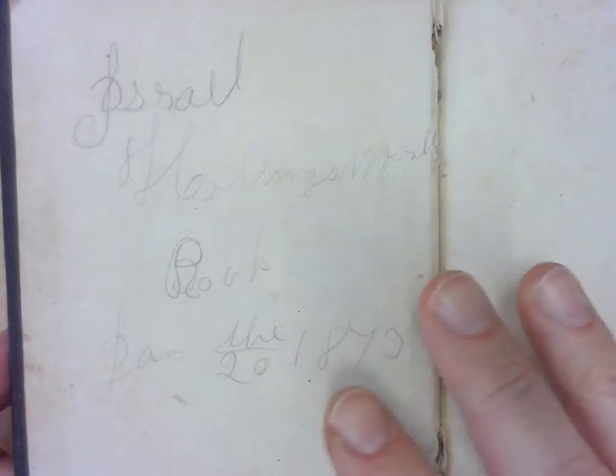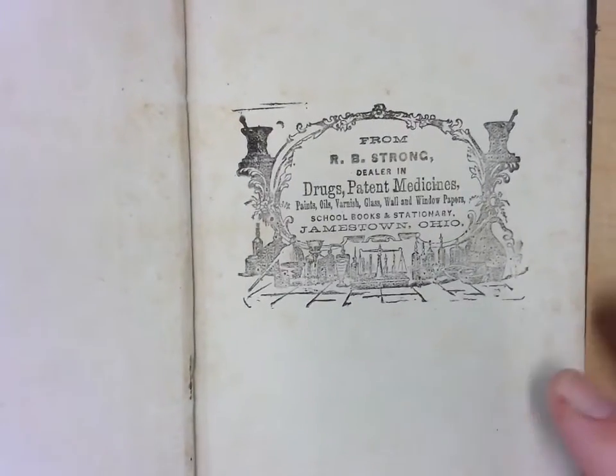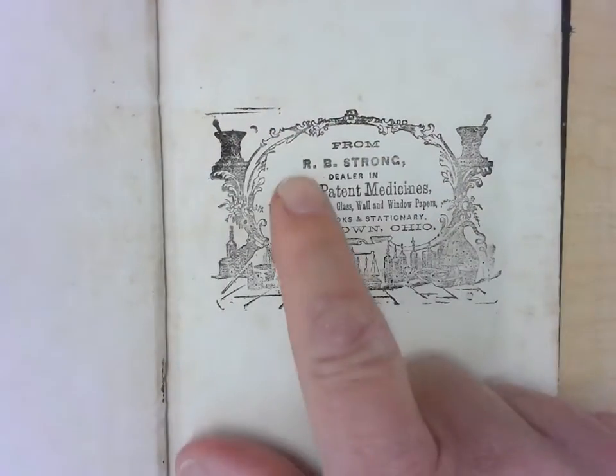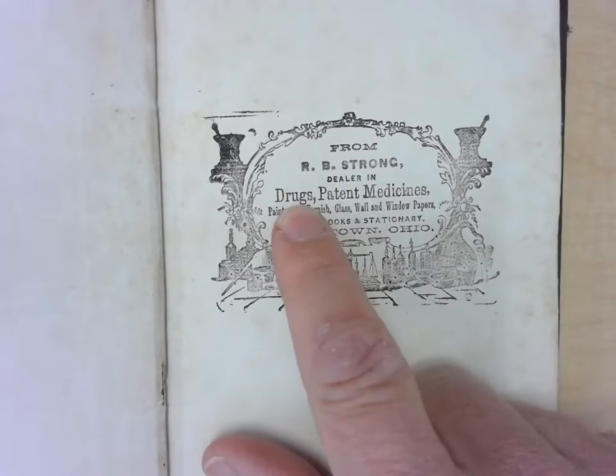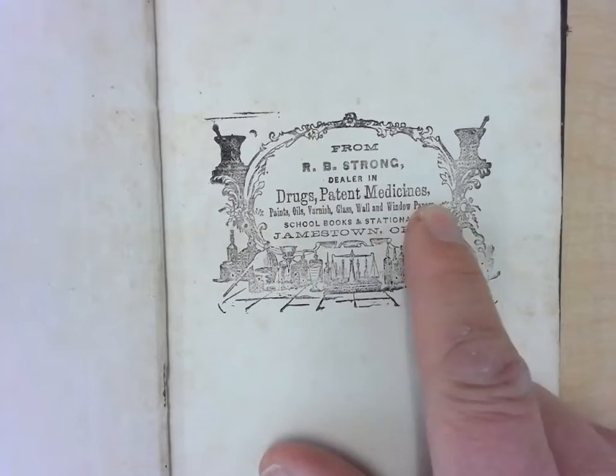So as I was saying, I never picked up the book until yesterday and flipped to the back, the very back of the book, which I thought was really cool. This is an ink stamp that was put into the book from RB Strong, a dealer in drugs, patent medicines,